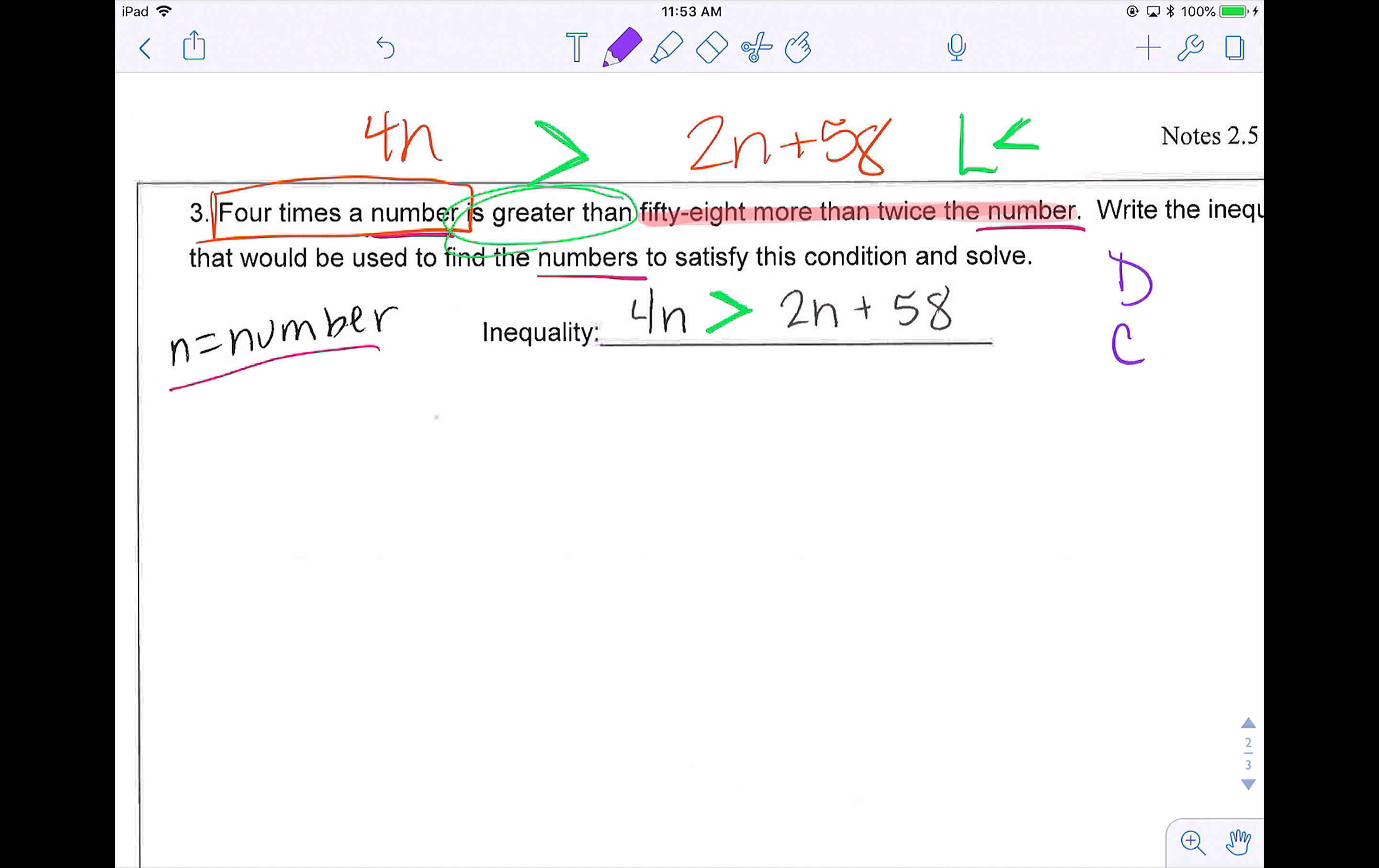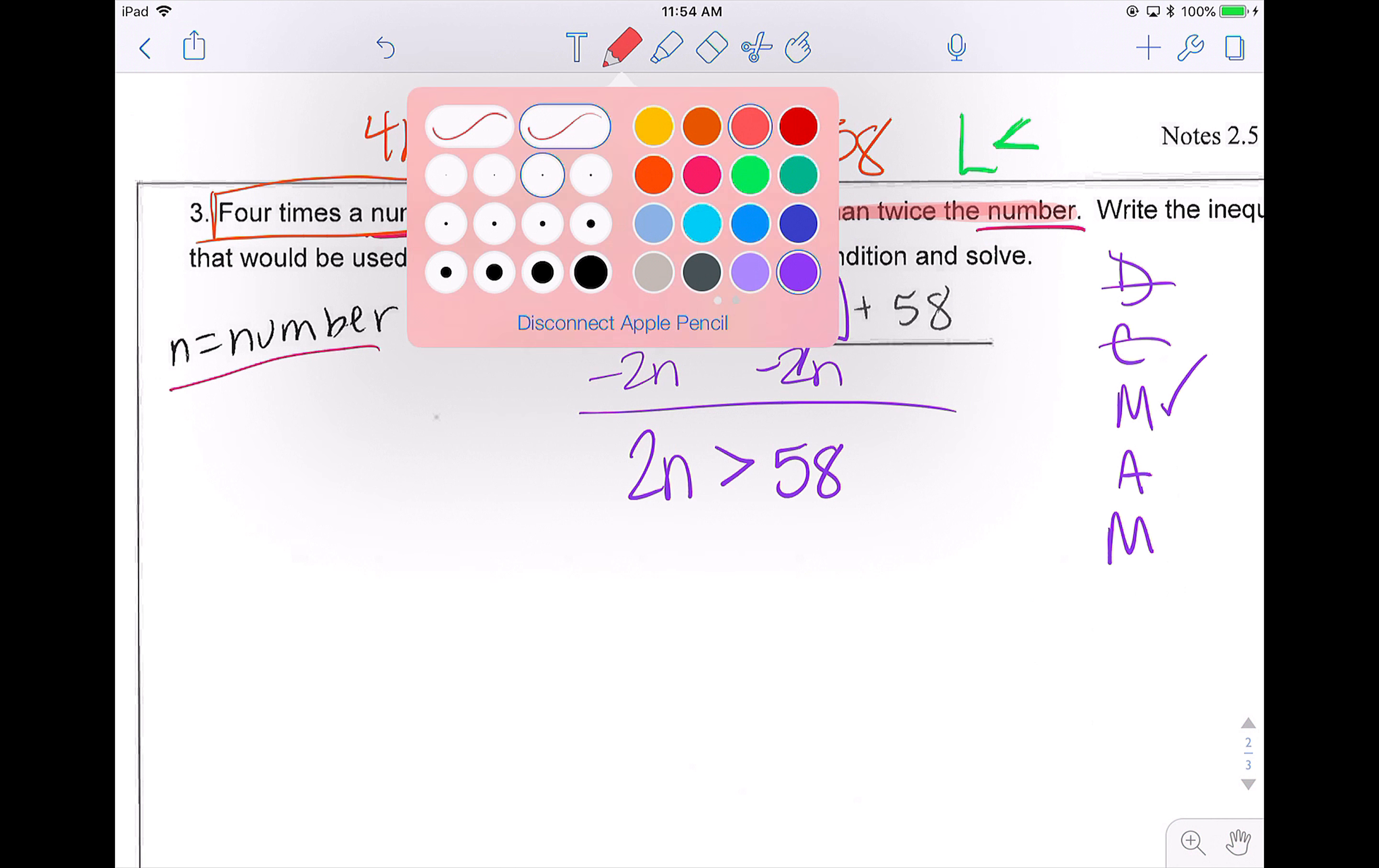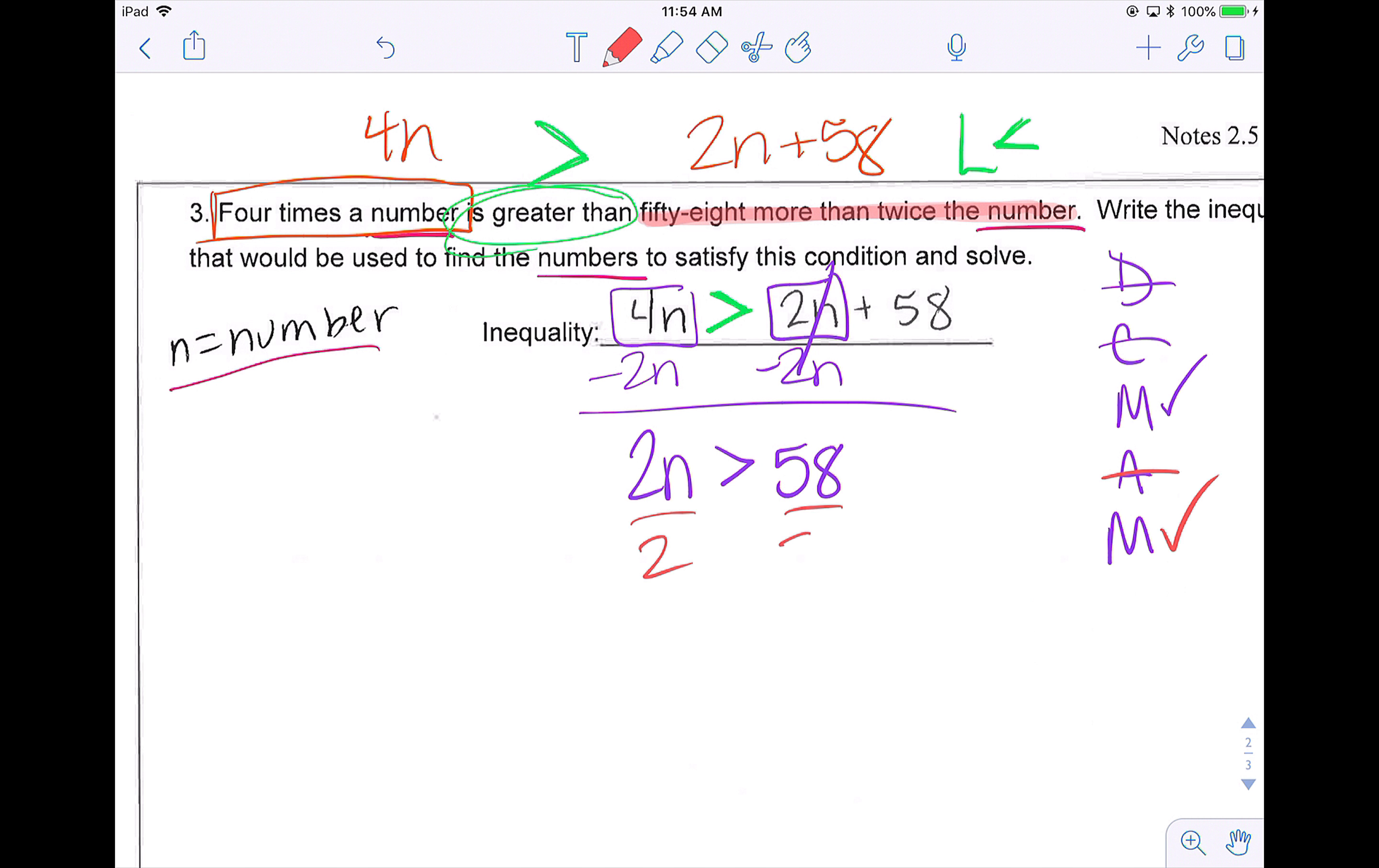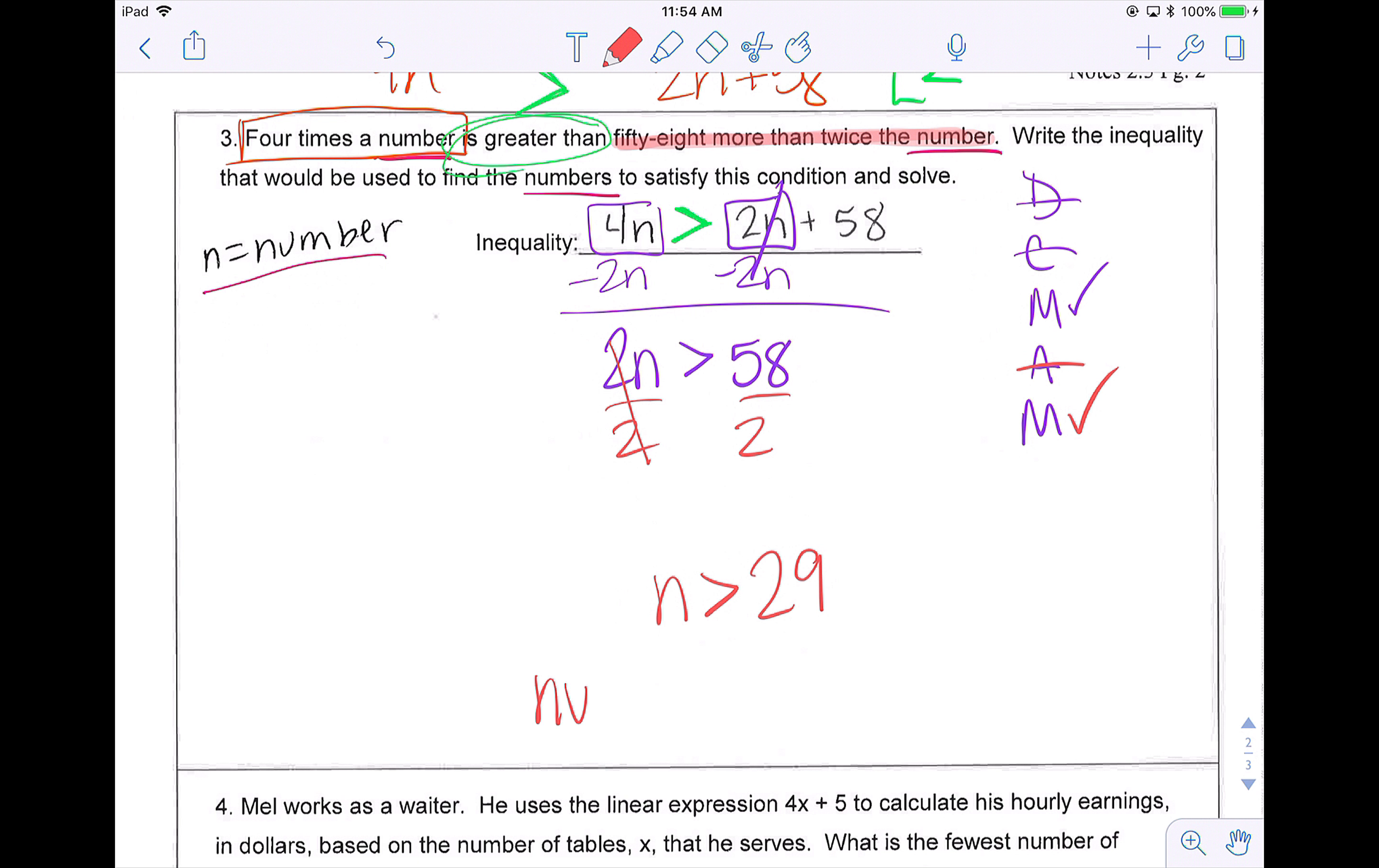Now they also asked me to solve. So I need to use my don't call me after midnight. I don't have parentheses to distribute. I don't have terms on both sides. I do have variables on both sides. So I'm going to move the two N. I'm going to move my variables to one side. I don't need to add or subtract, but I do need to multiply or divide. So in my calculator, 58 divided by two is 29. So any numbers greater than 29 would satisfy that condition.